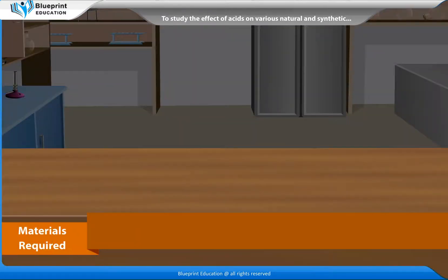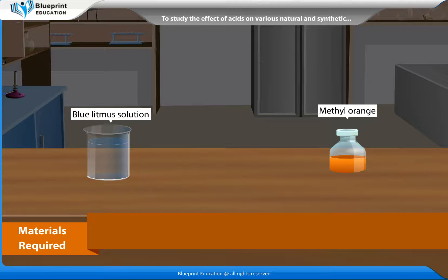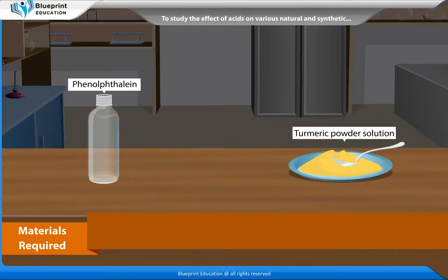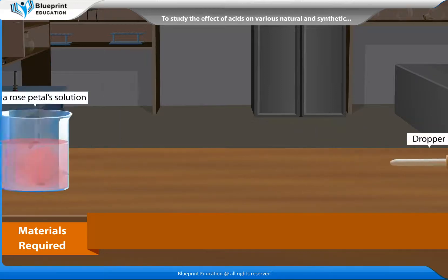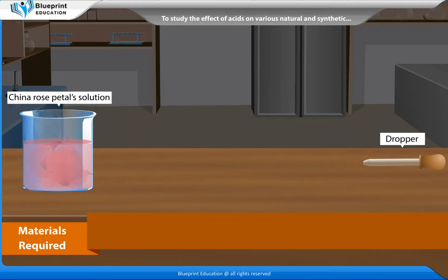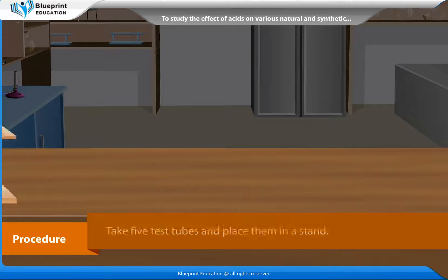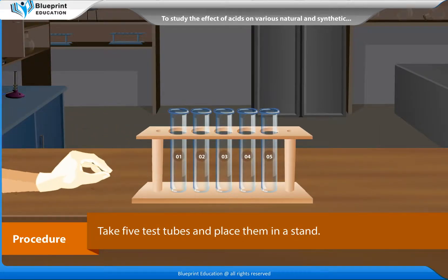The materials required are 5 test tubes, a test tube stand, blue litmus solution, methyl orange, phenolphthalein, turmeric powder solution, china rose petals solution, a dropper, and hydrochloric acid solution.